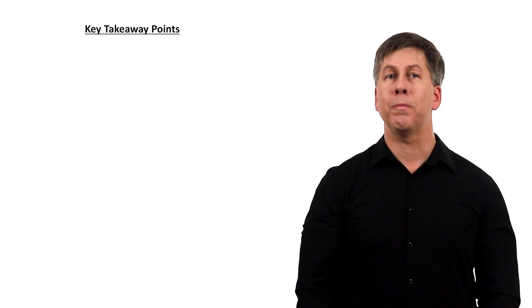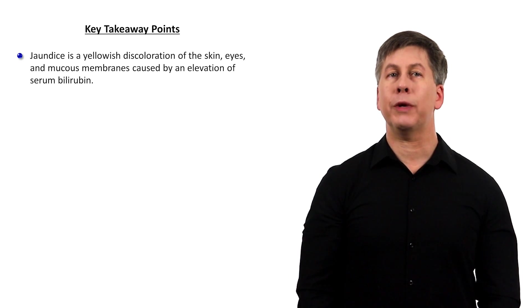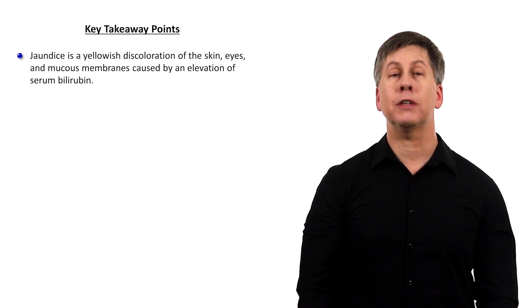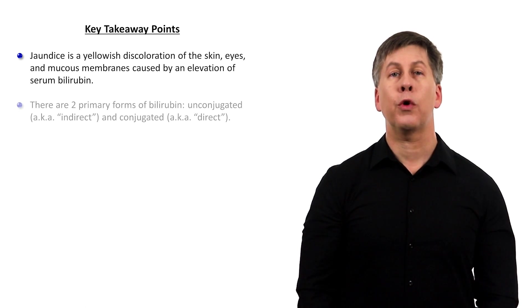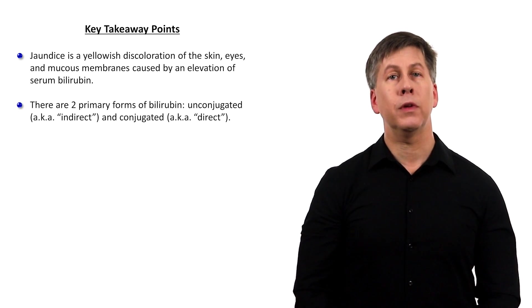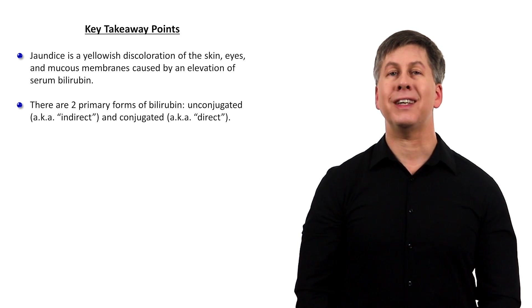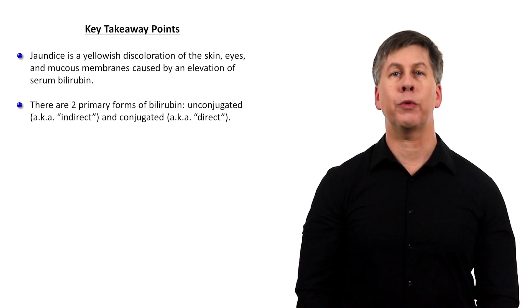Key takeaway points for this video. Jaundice is a yellowish discoloration of the skin, eyes, and mucous membranes caused by an elevation of serum bilirubin. There are two primary forms of bilirubin, unconjugated, also known as indirect, and conjugated, also known as direct.